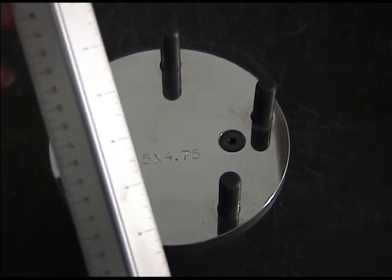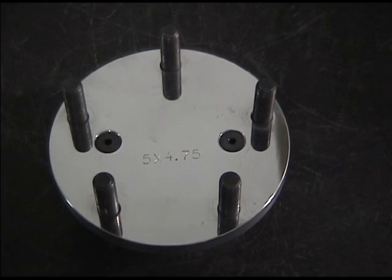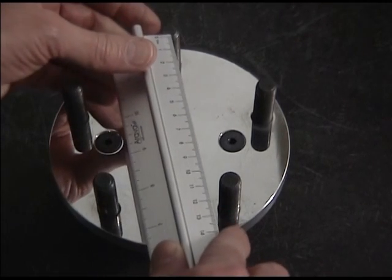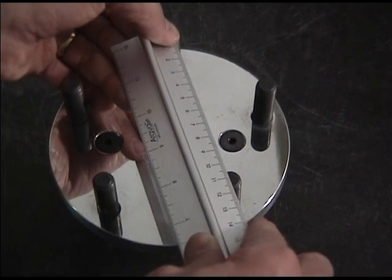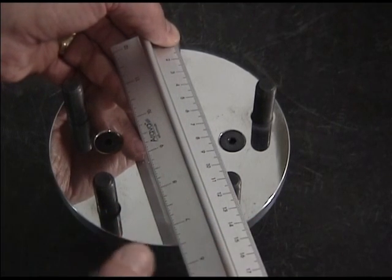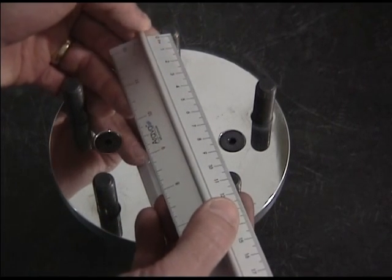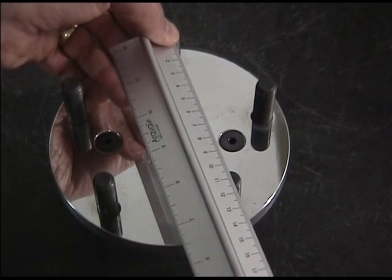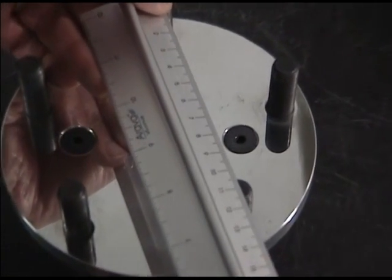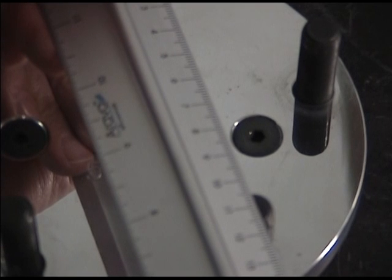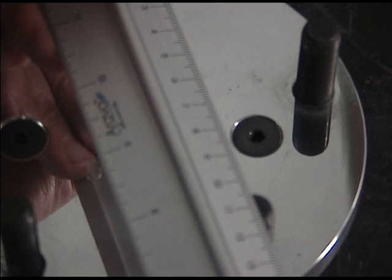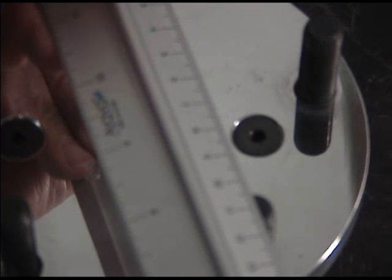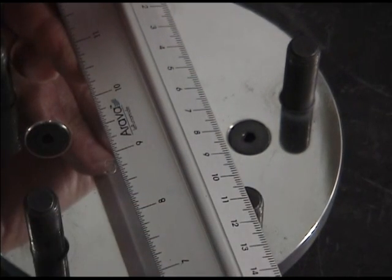Suppose that this bolt circle was a metric bolt circle. What would I do then? Well, I would measure from the bottom edge to the bottom edge of the one closest to being directly opposite. I would get my reading, and then I would add, in this case, what's a quarter of an inch equivalency? Well, that's approximately 6 millimeters.